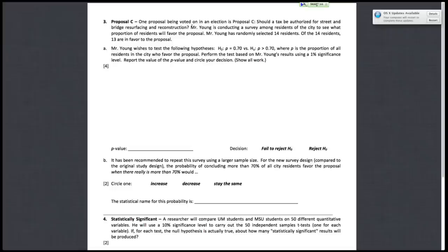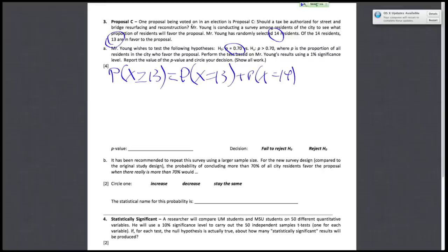So for this problem, your test statistic is 13. I'll circle right here. Your n is 14 and your proportion that you're testing is 0.7. So we basically just want to do this. We want to find the probability that x is equal to or greater than 13, which can be decomposed as the sum of these two probabilities: p of x is equal to 13 and p of x is equal to 14. So we can simplify this by doing this.